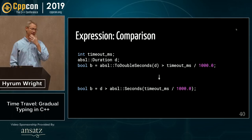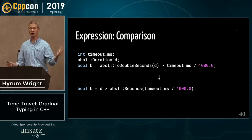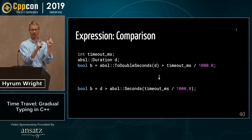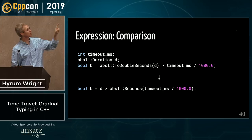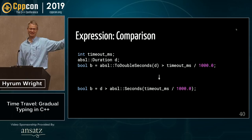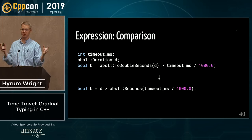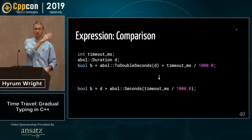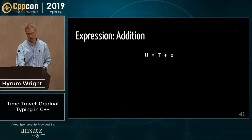We can also handle comparisons. If we have a Duration expression on one side of a comparison, the other side should also be a Duration, since comparisons are only well-defined between two Durations. So instead of doing the comparison in the numeric domain, we switch to doing it in the Duration domain — converting the numeric literal to a Duration for the comparison. The same applies to Time comparisons.